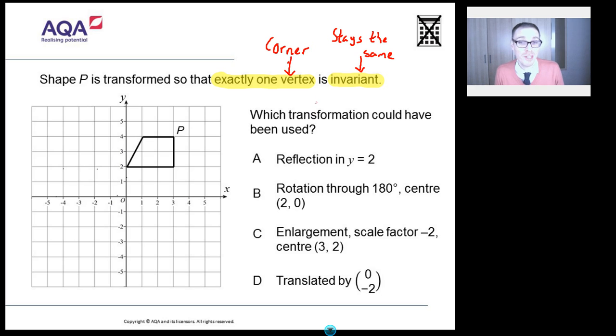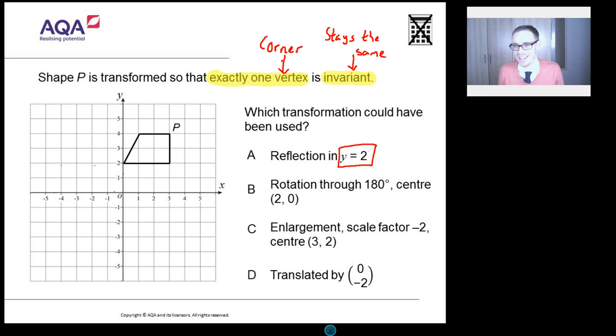Now I'll be honest with you, I've been dreading this video because I can't draw at the best of times, let alone when I'm trying to draw online. But I'll try my very best, but please be kind. So which transformation could have been used? Reflection in the line y equals 2. Easiest thing to do there is to just draw each of these and just see what happens. So y equals 2, what's that? Well that is a horizontal line through 2 on the y axis. Let's go for a purple. So y equals 2 is going to be that line there.